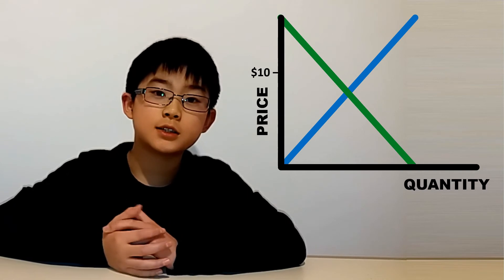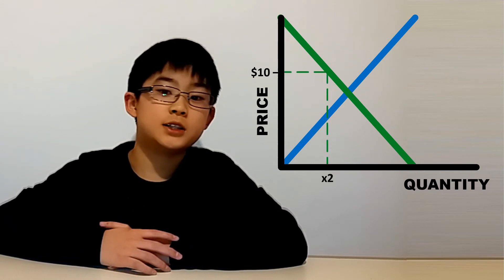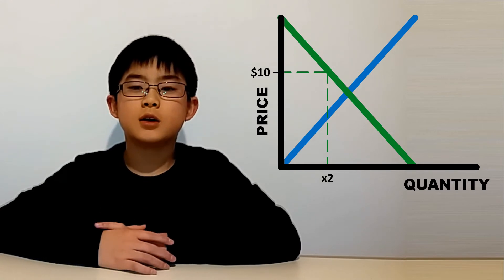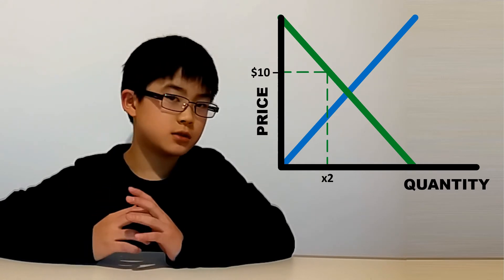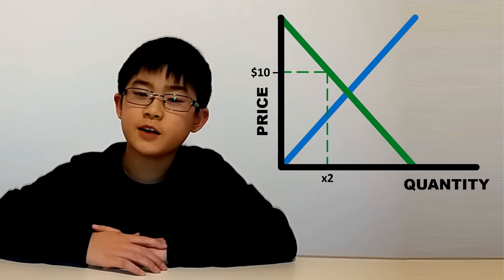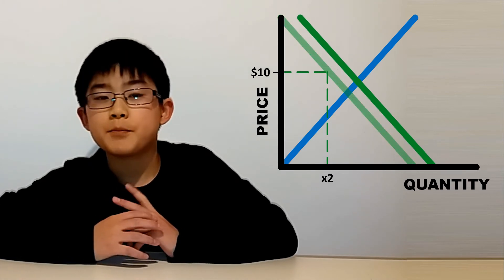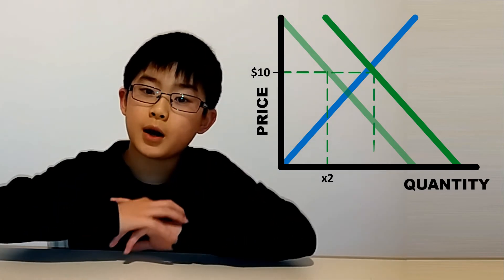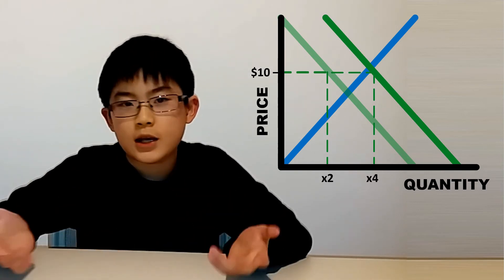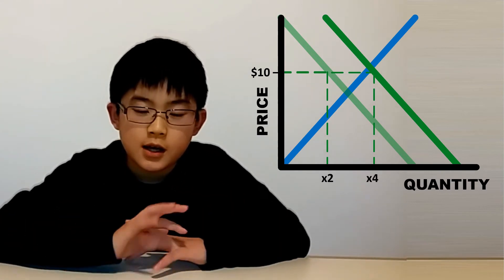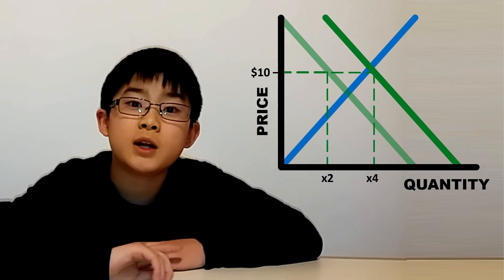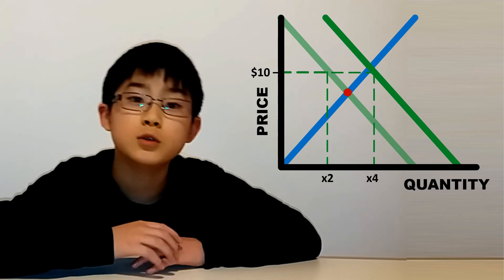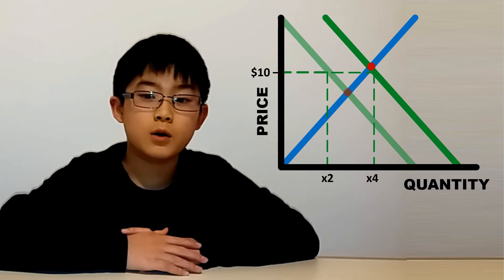Say a supply and demand graph for sunglasses averagely looks like this. At the $10 price for sunglasses, buyers may averagely want to purchase two pairs in quantity. A heat wave increases demand because you want more sunglasses, right? So we shift the demand curve to the right. This means now, if we look at that same $10 price, buyers will actually want to buy four pairs of sunglasses because they love sunglasses in this heat wave. Also, take into note that the equilibrium price of sunglasses where demand equals supply also changes with a shift, or any shift for that matter.